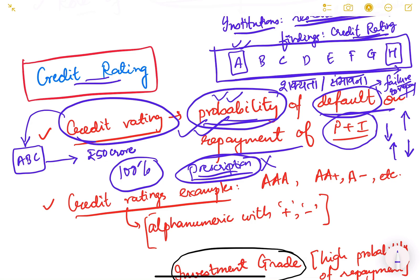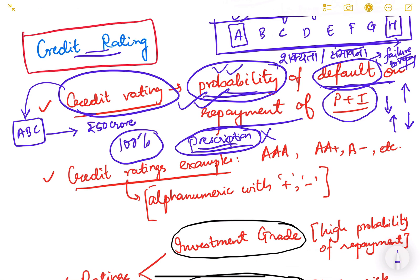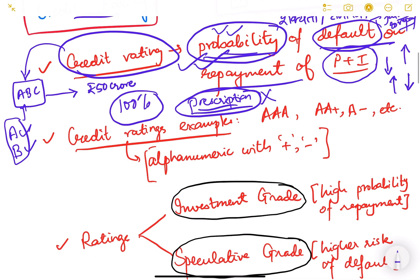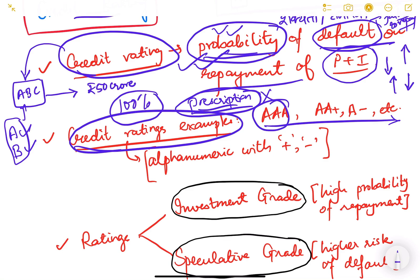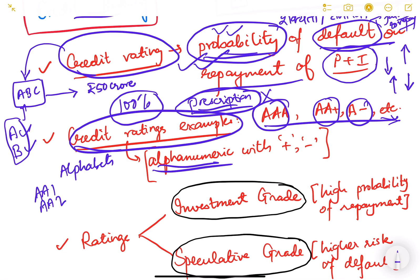Credit rating also varies from company to company. There are many credit rating agencies and one may give ABC an A grade while another gives B grade, depending on their own research. Examples of credit ratings look like triple-A, double-A plus, A minus, etc. These are always alphanumeric — meaning there are alphabets like A, B, C and numbers like A1, A2, along with plus or minus signs. Different agencies have different scales.